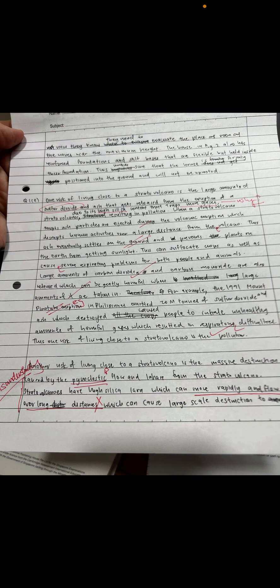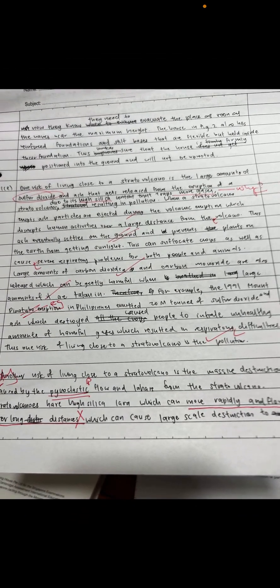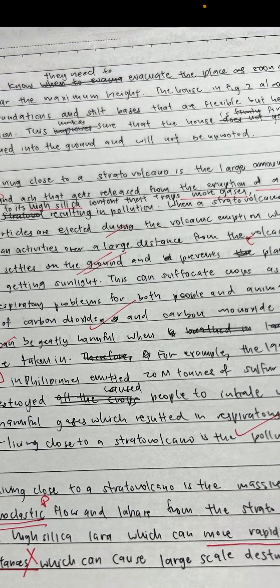Looking at this particular candidate, her first paragraph deals with stratovolcanoes. She talks about large amounts of gases — sulfur dioxide and ash — that are ejected. She also mentions high silica content, which is a good idea to introduce in order to differentiate the two volcanoes. She then discusses how silica content leads to conditions creating the explosiveness experienced at a stratovolcano.